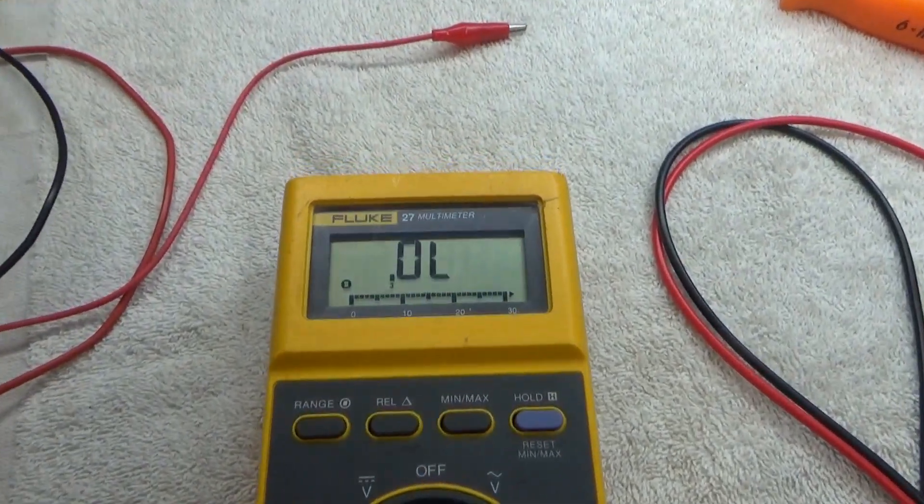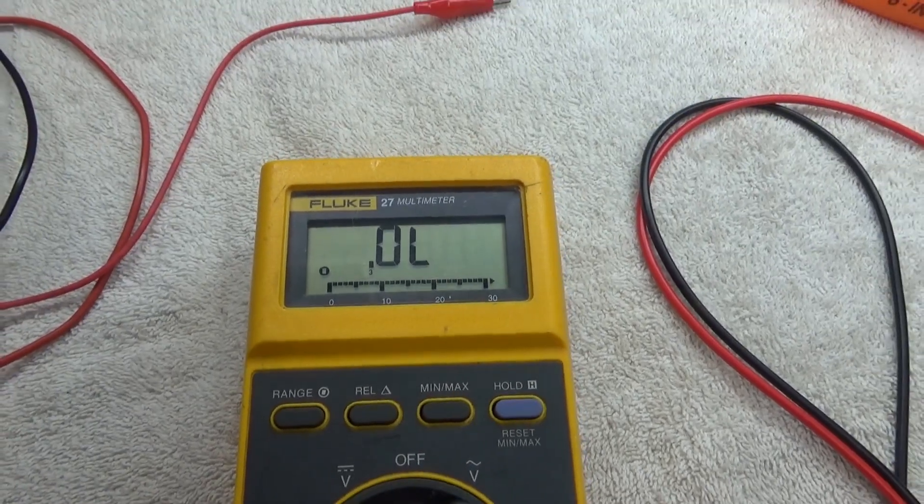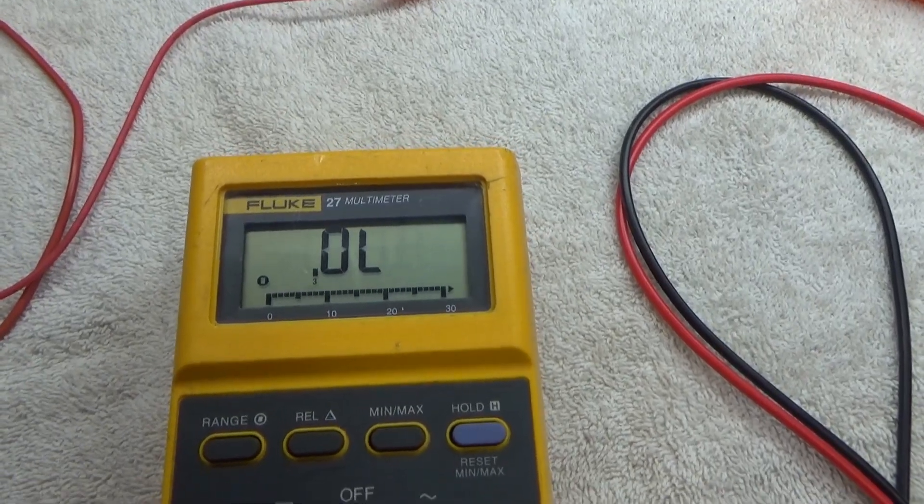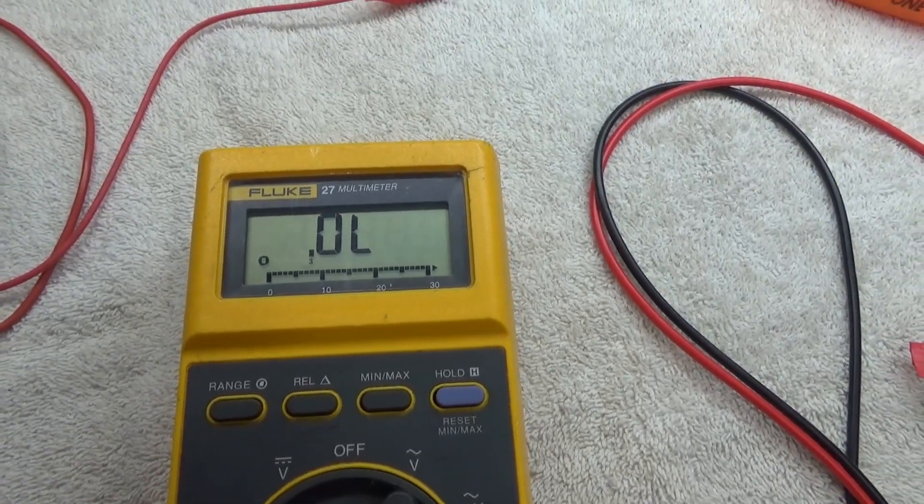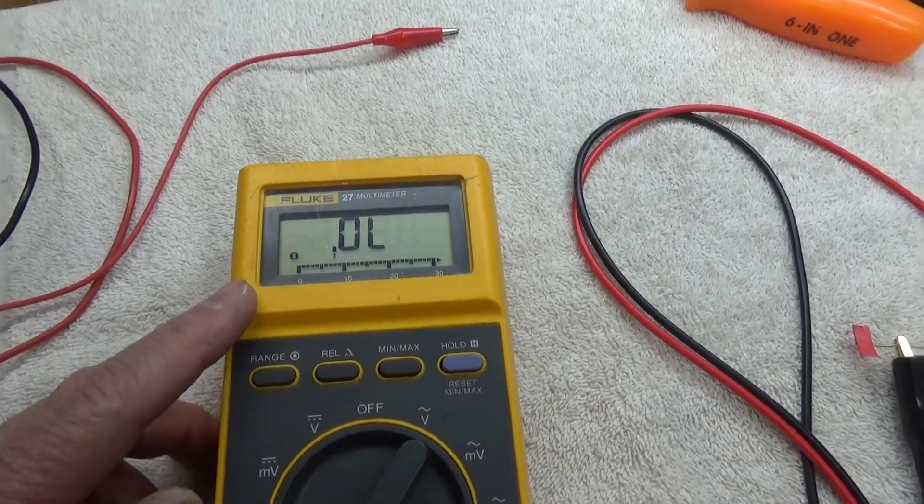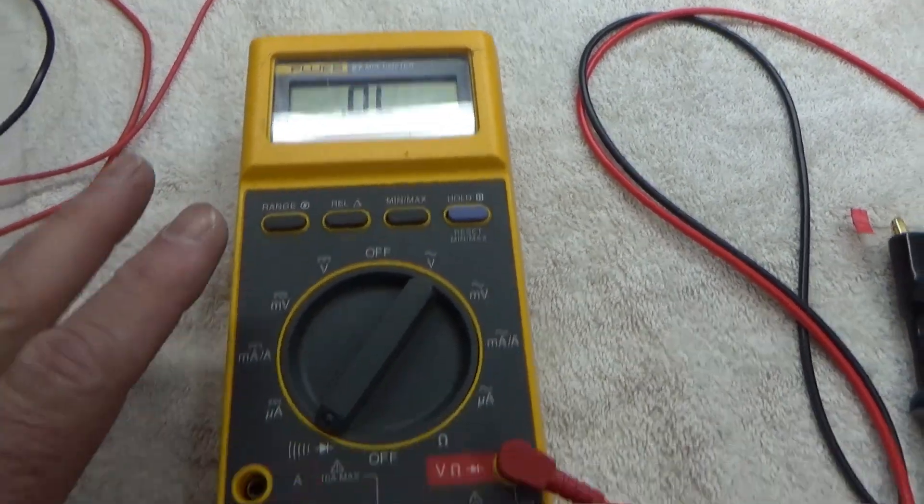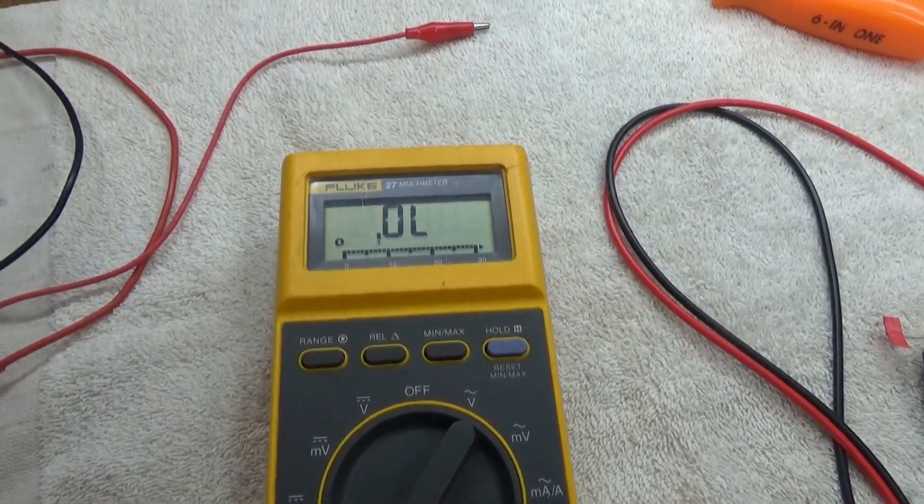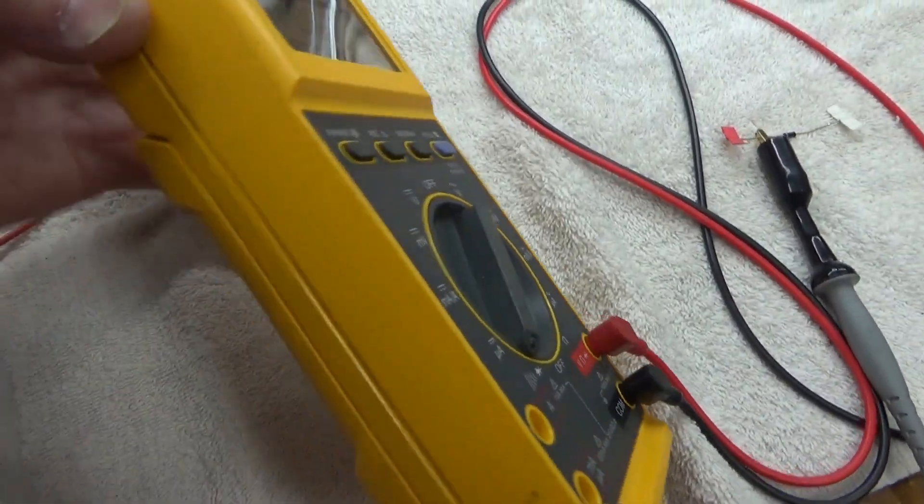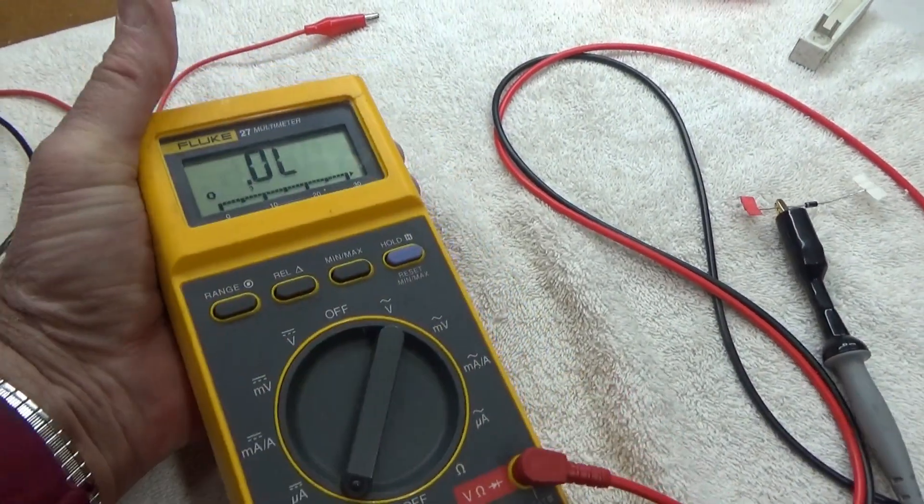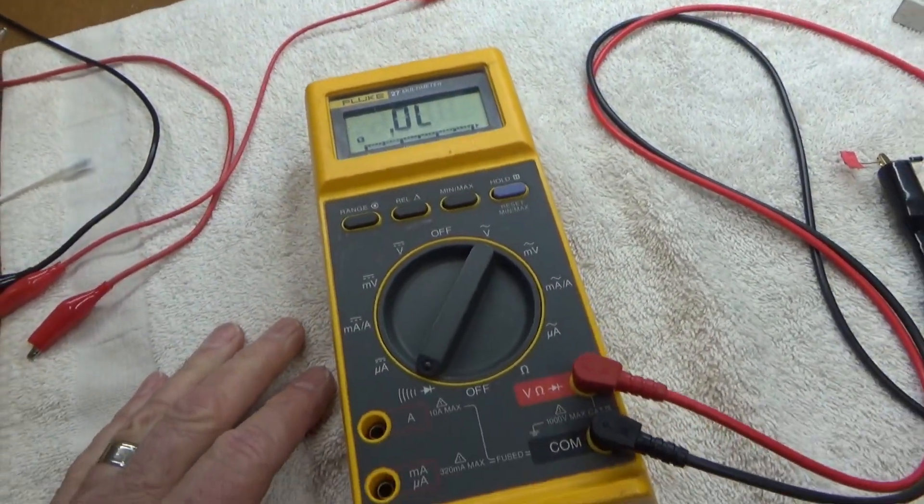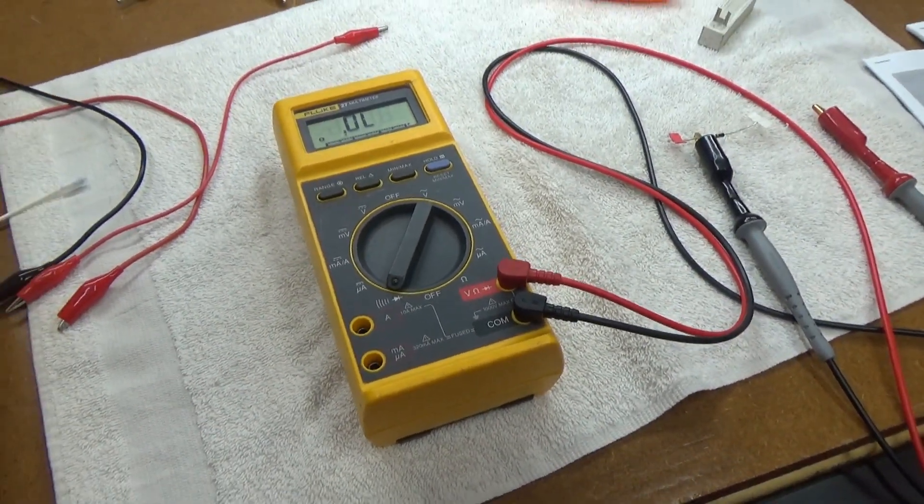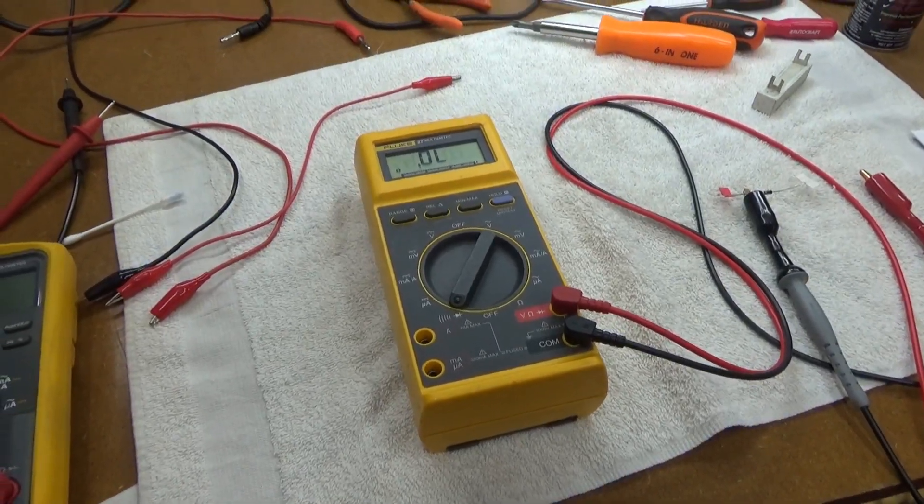So there you go, there's my repair attempt on my brand new 20 year old Fluke 27. This one I figure is about 20 years old. They started making these in the late 80s and this model is from the early 2000s. Still very useful. I love the meter, it's very solid, waterproof, drop proof. So I'll just remember it has this little quirk. Thank you very much for watching and I'll see you in the next video.